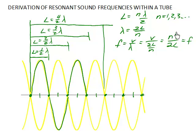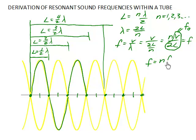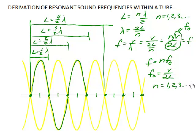Now, the combination V over 2L we're going to give a special name: that is F-naught, called the fundamental. It's the lowest frequency out of the set of all the harmonics. So the frequencies that you get in a tube that is closed at both ends are N times F-naught, where F-naught equals V over 2L and N equals 1, 2, 3 — any integer. This is our final result for a tube that is closed at both ends.